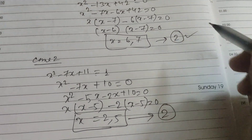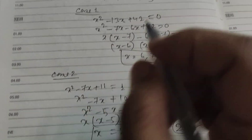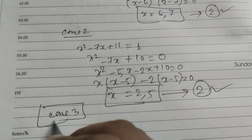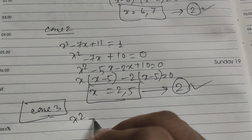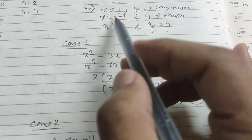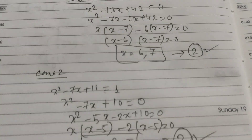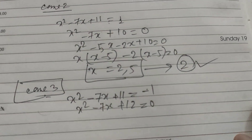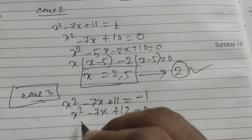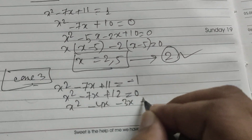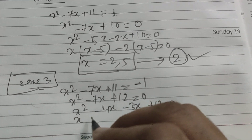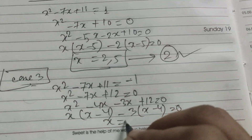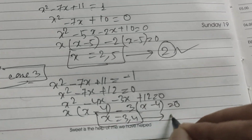For Case 3, we set the base equal to -1: x² - 7x + 11 = -1, so x² - 7x + 12 = 0. Factoring: x² - 4x - 3x + 12 = 0, giving x(x - 4) - 3(x - 4) = 0, so (x - 3)(x - 4) = 0. Therefore x = 3 and x = 4 — again two possibilities.